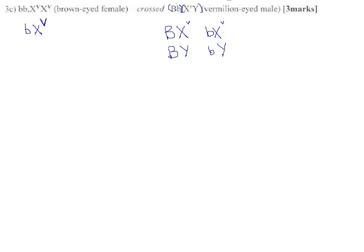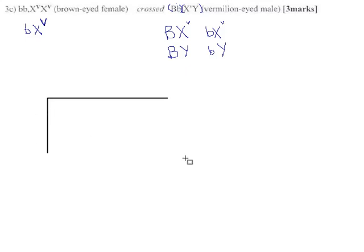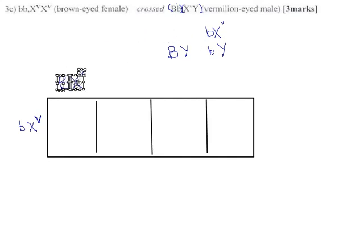So we can do a Punnett thing. It'll be a one by four. Dad goes there. Mom egg. No, sorry. This is the egg.